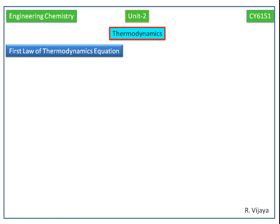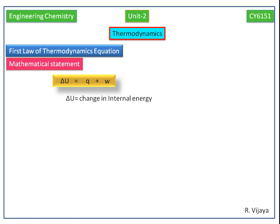Now we discuss the first law of thermodynamics equation in the form of a mathematical statement. Delta U is the algebraic sum of Q and W, where delta U is the change in internal energy, Q is heat, and W is work done.